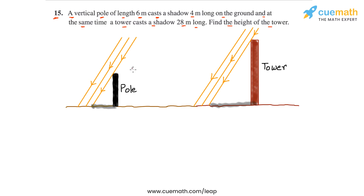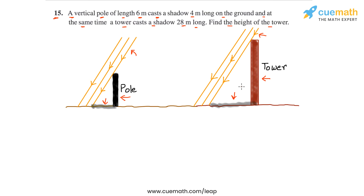Follow me carefully as I explain this figure. This here is the vertical pole, this is the shadow of the pole, and these are rays of sunlight falling and creating this shadow. Similarly, we have this tower here, this is the shadow of the tower, and these rays are creating the shadow of the tower.